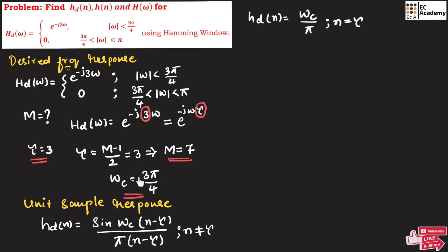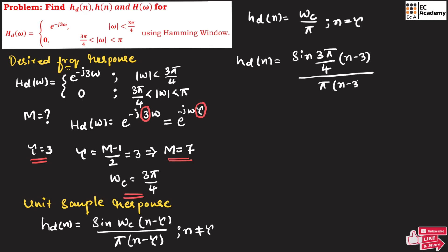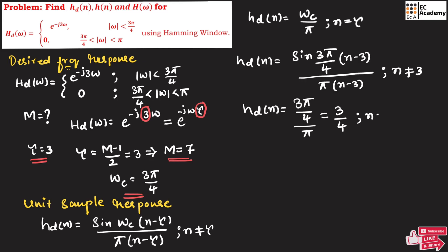Since ω_c = 3π/4, substituting into the formulas: hd(n) = sin(3π/4 · (n−3)) / (π · (n−3)) for n ≠ 3, and hd(n) = (3π/4) / π = 3/4 = 0.75 for n = 3.